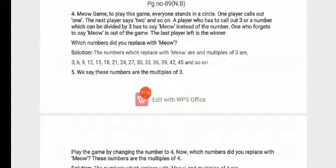Which numbers did you replace with meow? Which numbers do you replace with meow? What do you write? We have to say multiples of three. Multiples of three, meaning these numbers which come in the three table or are divisible by three.